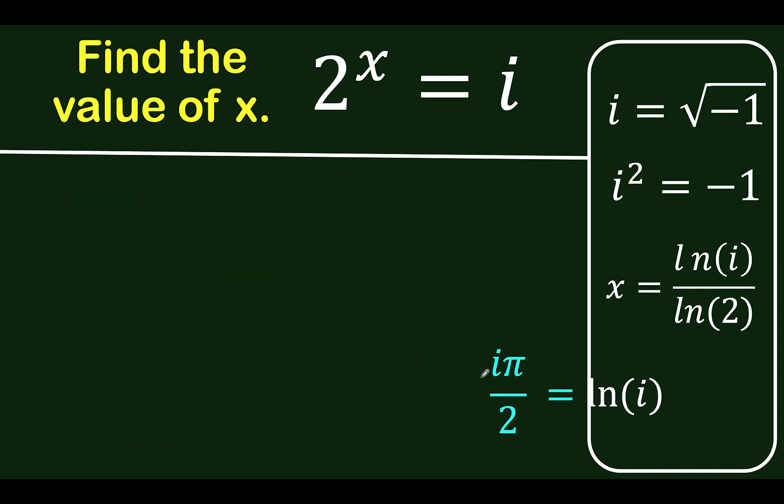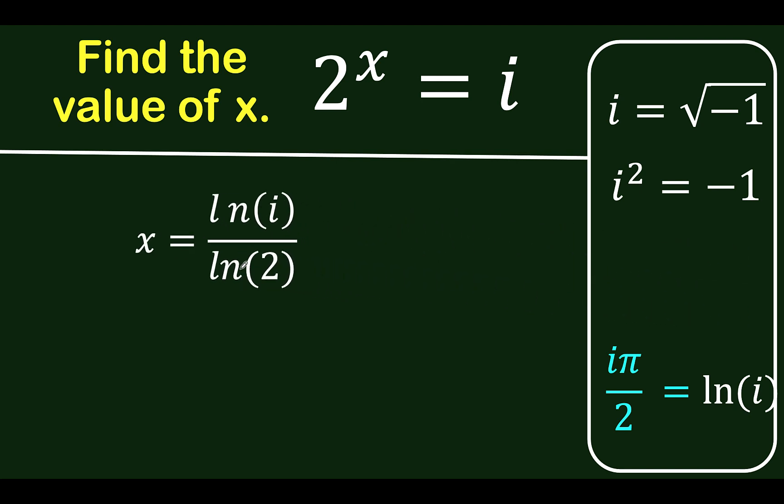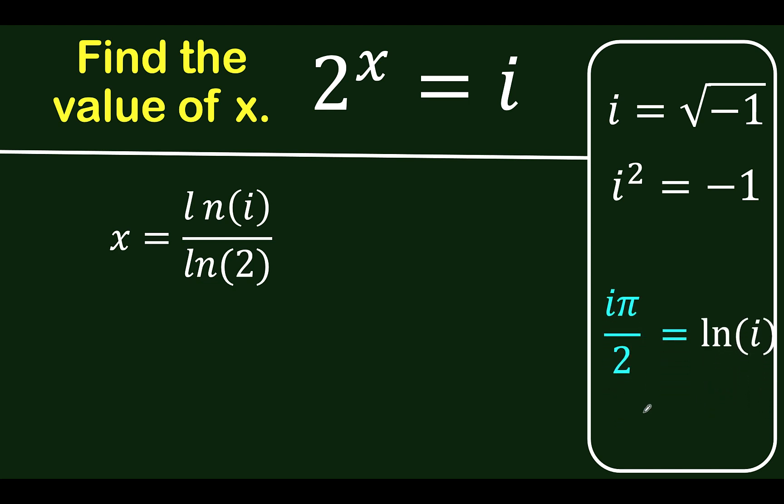Let's remember this result. Going back to the preliminary result we arrived at earlier, we know that x equals ln of i over ln of 2. ln of 2 is a constant, and ln of i equals iπ over 2. So we can now replace ln of i by this result.